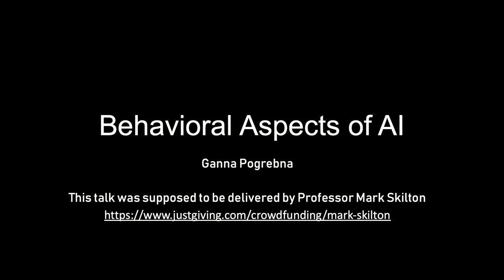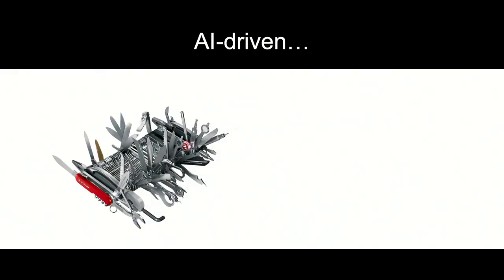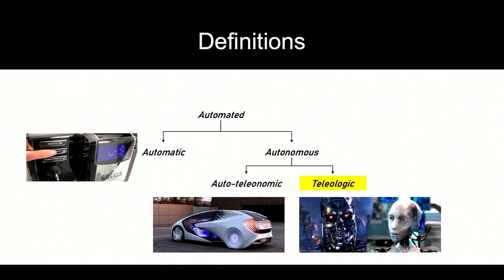So, behavioral aspects of AI. If we look at AI-driven business models or AI-driven algorithms, we often see that it's functionality over ergonomics. We have many complicated algorithms that try to work with human behavior — either alongside it or to change it. But essentially, if we look at artificial intelligence, it's very difficult to define it. I was trying to write an article with several co-authors and we were trying to define artificial intelligence, but we decided we couldn't, because there are so many definitions and so many different approaches.